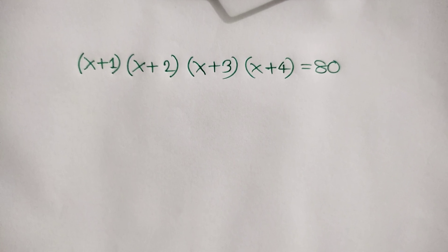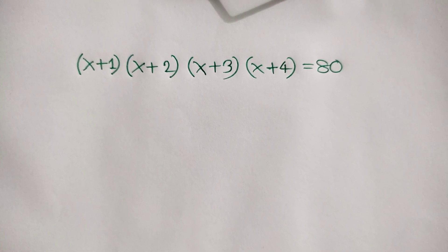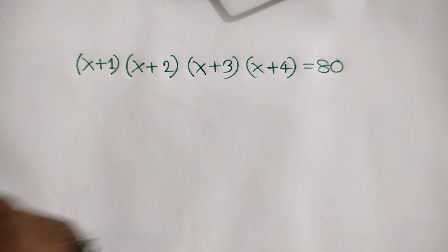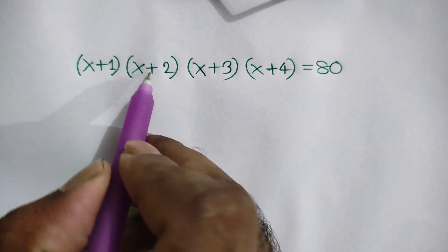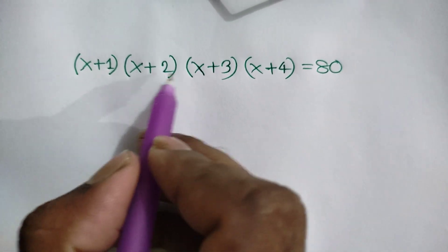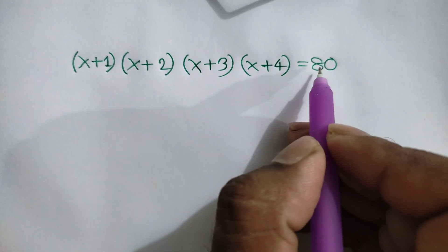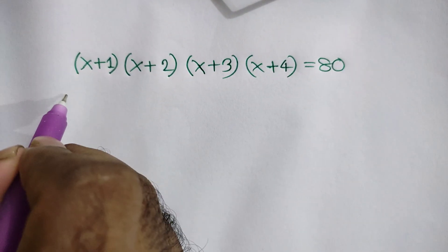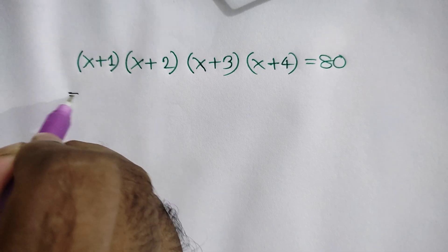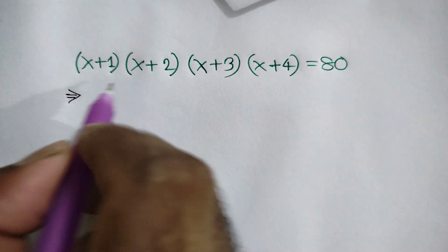Hi everyone. In this video I am going to show how to find the value of x, where (x+1)(x+2)(x+3)(x+4) is equal to 80.